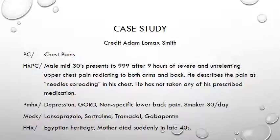Past medical history was depression, gastroesophageal reflux disease, some non-specific lower back pain, and he was a smoker of about 30 a day. He was medicated for those above conditions and he had a family history of Egyptian heritage, and his mother died suddenly in her late 40s.